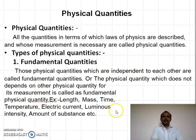Next is physical quantities. All physical quantities in terms of which laws of physics are described. I will also show you about physical quantities and units. Here there are two types of physical quantities: one is fundamental quantities and the other is derived quantities. We will discuss all these things in detail.